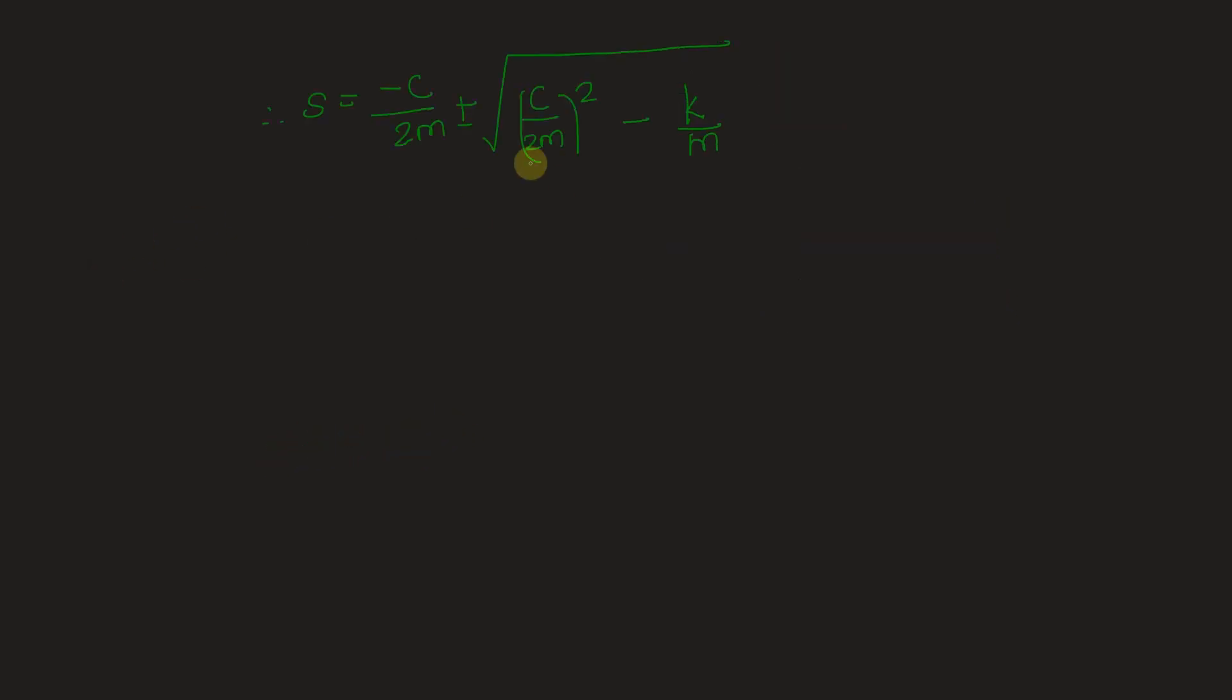Now the damping constant becomes critical damping constant when this radical equates to 0—there are equal roots for the given quadratic equation. Hence we put the radical to be equal to 0, so [cc/2m]² - k/m = 0. We get cc = 2√(km).